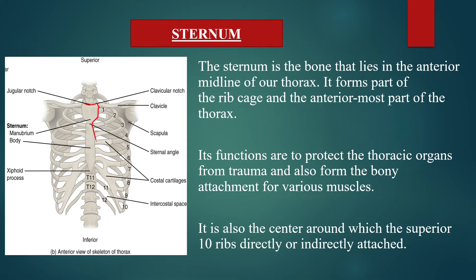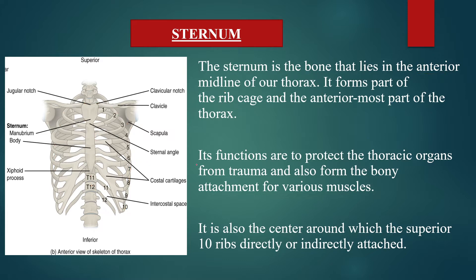This whole structure that I am highlighting in red is your sternum bone. The sternum bone lies in the anterior midline of the thorax. The thorax is the region above your stomach and below your skull — that chest area. The sternum lies in the anterior midline of the thorax and forms part of your rib cage, being the anteriormost part of your thorax.